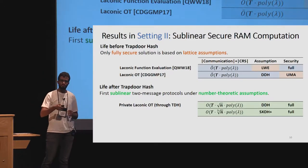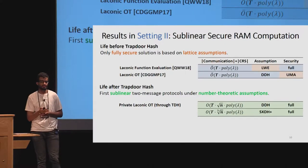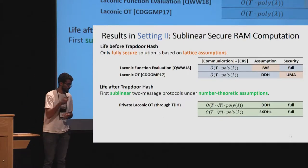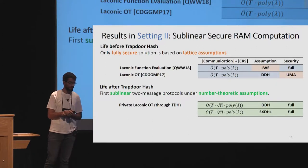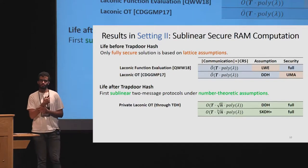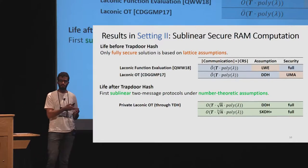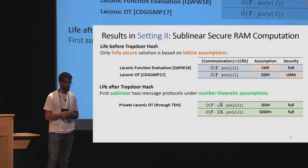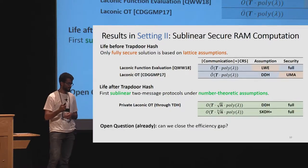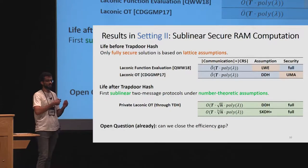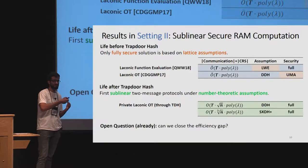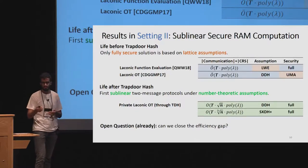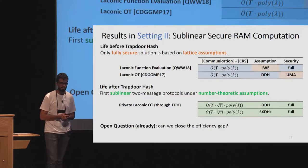Using trapdoor hash, we get the first fully secure solution with sublinear communication based on number-theoretic assumptions. Specifically, using something we call private laconic OT, we get a protocol with communication complexity proportional to t·√n under DDH, and t·∛n using bilinear groups with pairings. An open question is whether we can close the efficiency gap between lattice-based solutions and solutions based on assumptions like DDH.